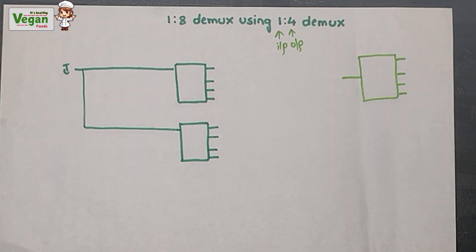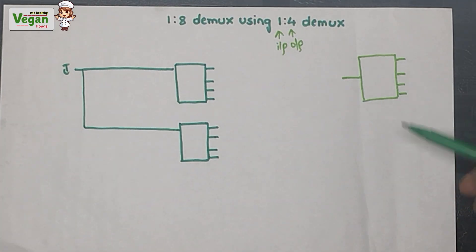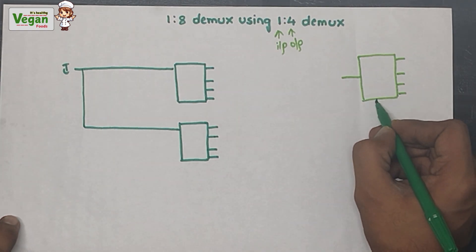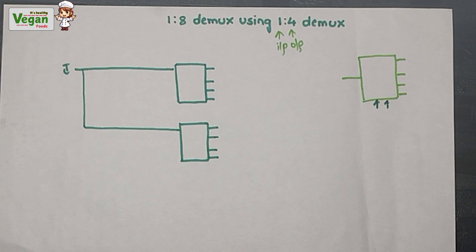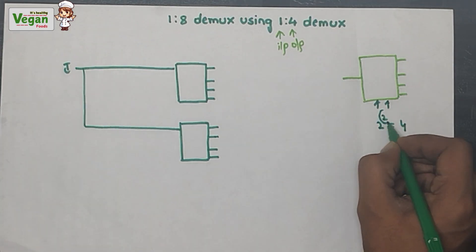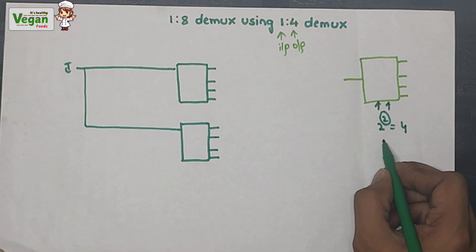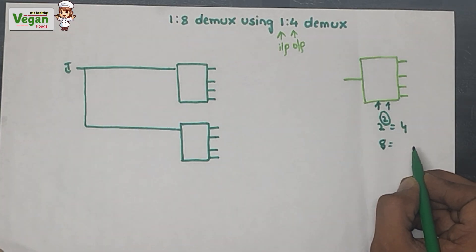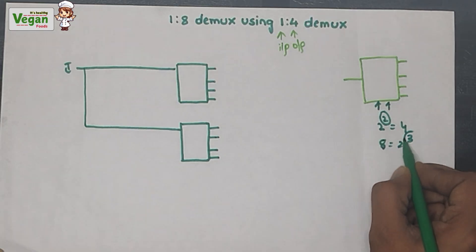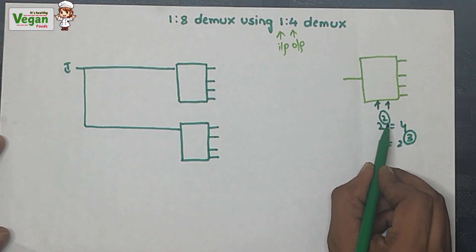In a demultiplexer, the input is routed to one of the outputs using select lines. To determine the number of select lines needed: for four outputs, 2^2 = 4, so we need two select lines. For eight outputs, 2^3 = 8, so we need three select lines for a 1-to-8 demux.